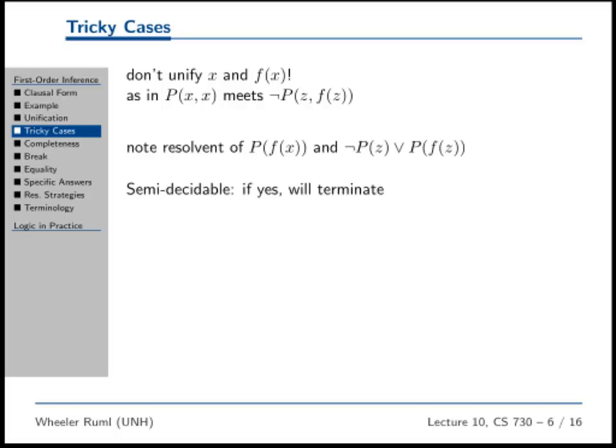Well, because what would that even mean? Like if you're supposed to substitute f of x for x everywhere, but then x occurs in f of x, then do you have like f of f of x? I mean, it's just not obvious what to do there. So don't do that. Can't do that.